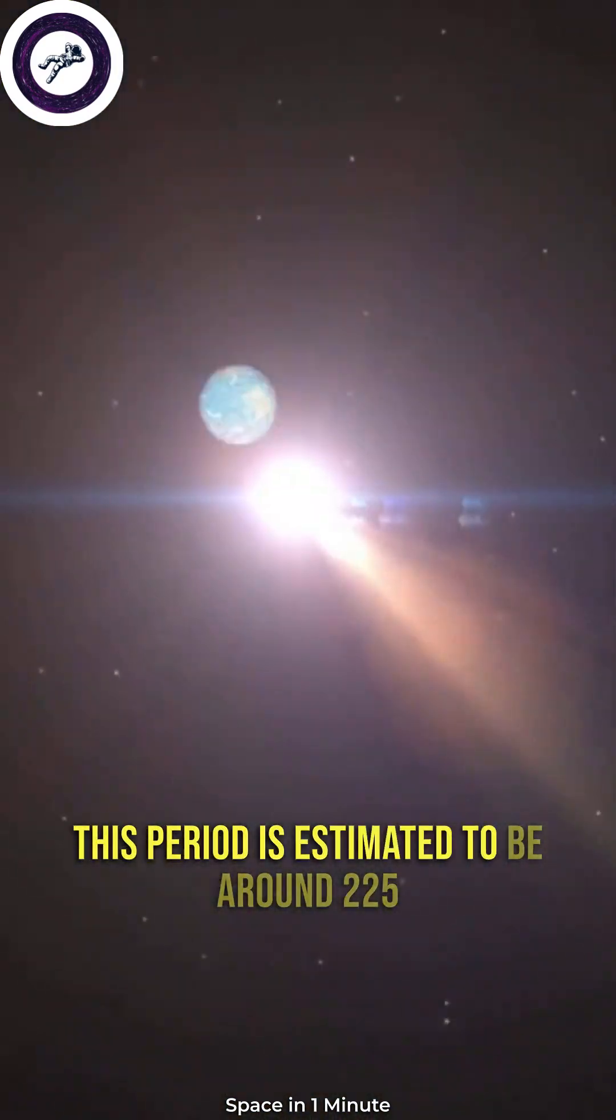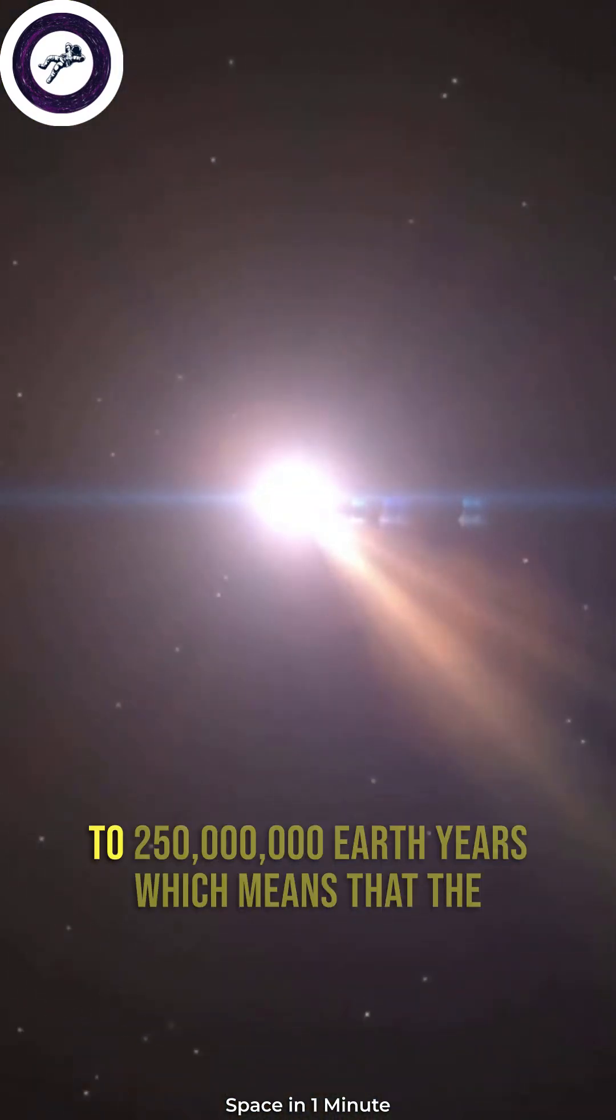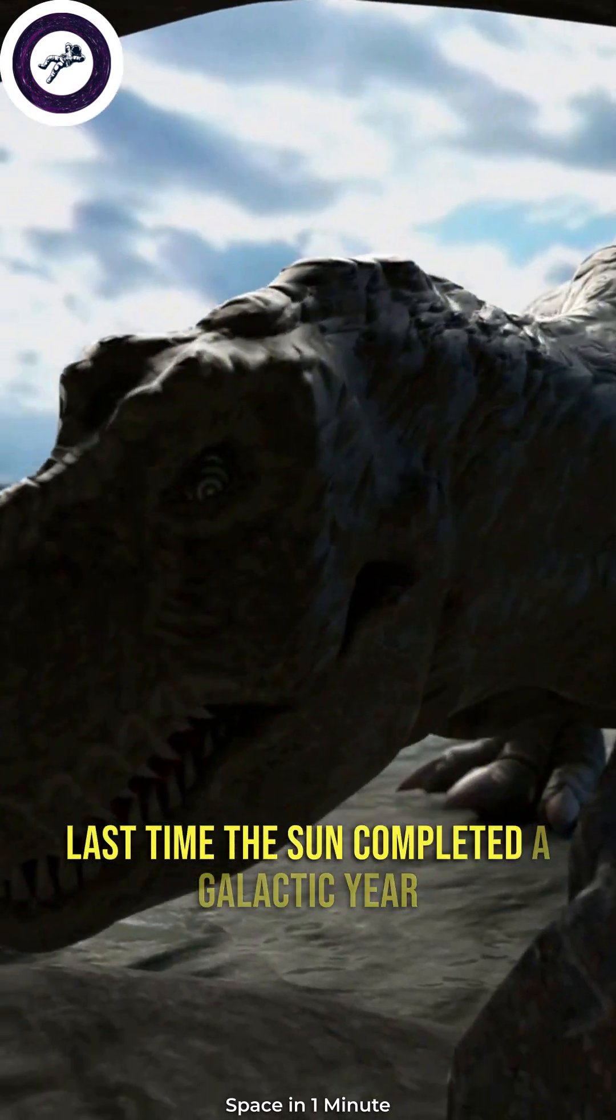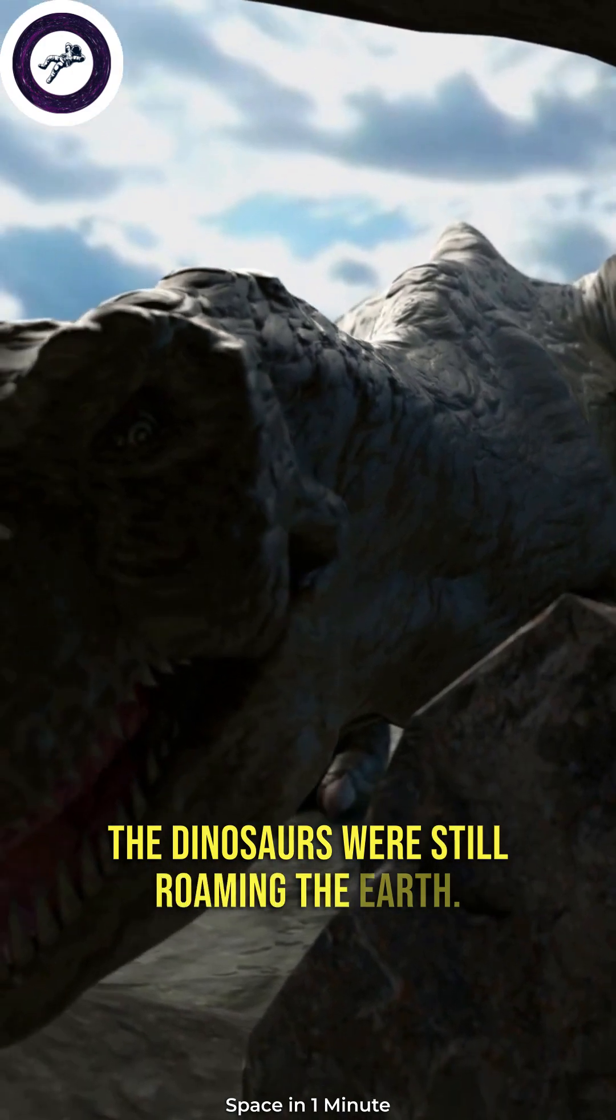This period is estimated to be around 225 to 250 million earth years, which means that the last time the sun completed a galactic year, the dinosaurs were still roaming the earth.